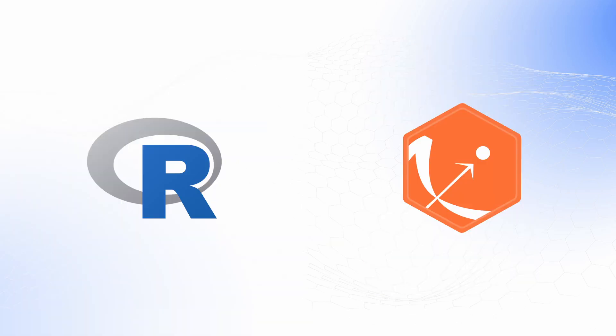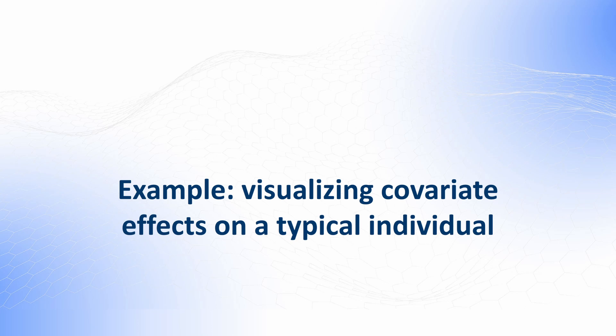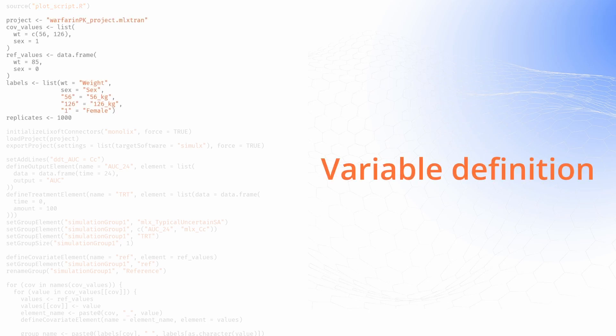Let's see how to use the Lixoft Connectors R package to generate both types of forest plots in R, based on our Monolix project. The script that automates the workflow for Example 1 — without inter-individual variability — first sources the R file containing the function used to plot covariate effects. Then it defines certain variables: the file path to the Monolix project, covariate values that will be used, reference values for covariates, and the number of replicates.